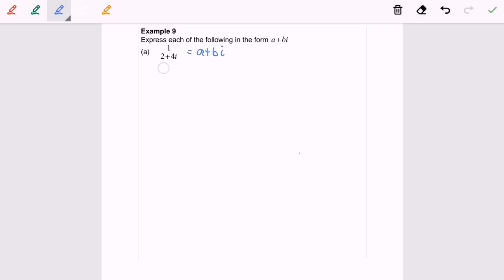This is how we find the answer. So 1 over 2 plus 4i, multiply with the conjugate, so it will become 2 minus 4i over 2 minus 4i. Expand, so we will have 2 minus 4i over 4 minus 8i plus 8i minus 16i squared.